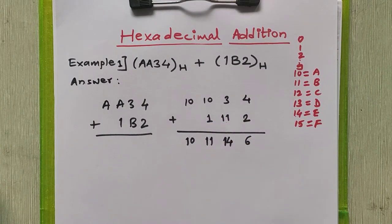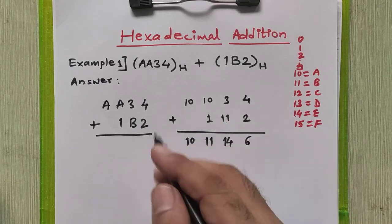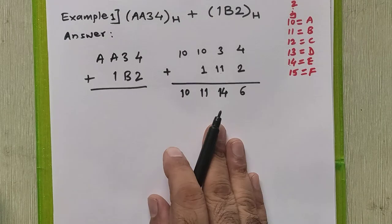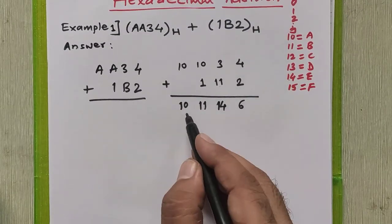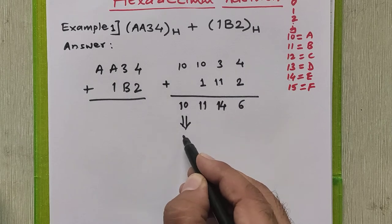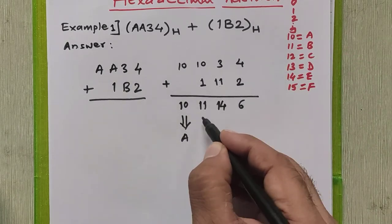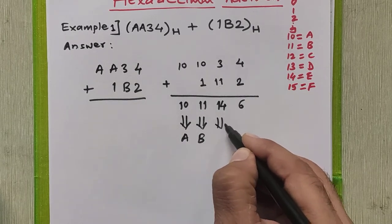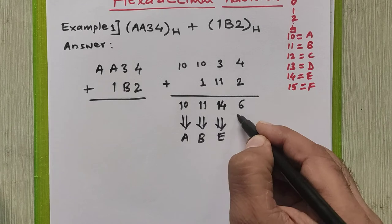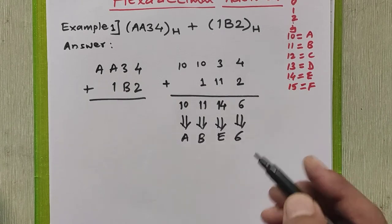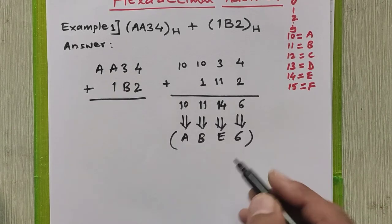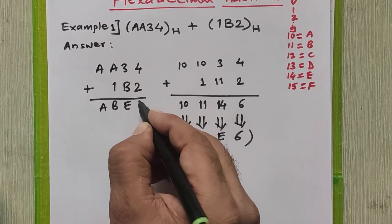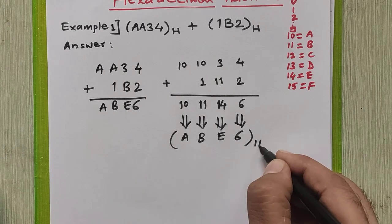So in this problem there was no carry generated. The result of this addition: 10 in hexadecimal is A, 11 is B, 14 is E, and 6 stays as 6. So we write the answer as A, B, E, 6 in hexadecimal.